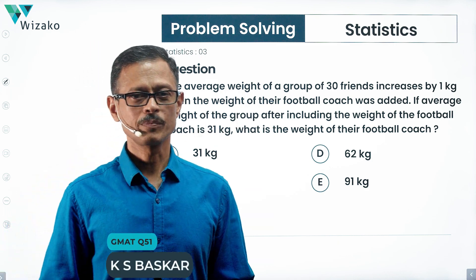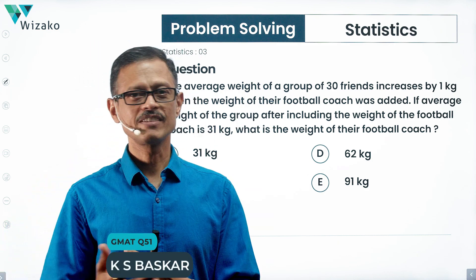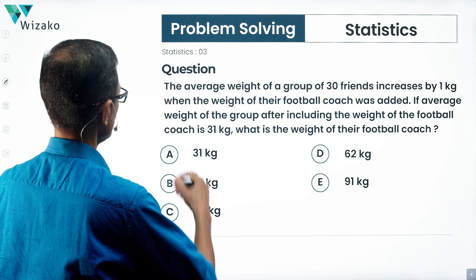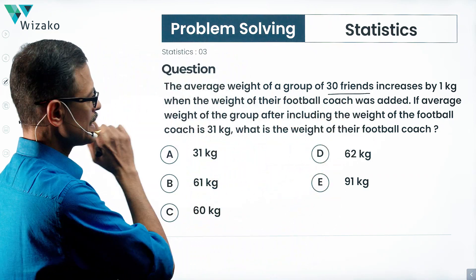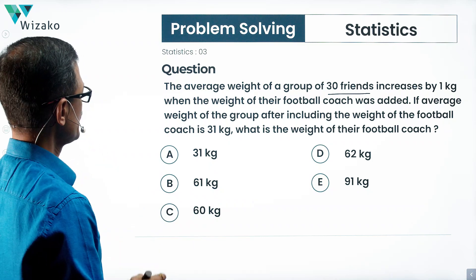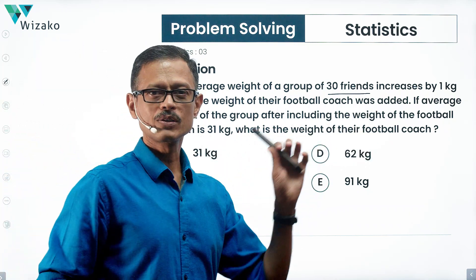This is an easy GMAT problem-solving practice question from Weighted Average and Statistics. The average weight of a group of 30 friends increases by 1 kg when the weight of their football coach was added.